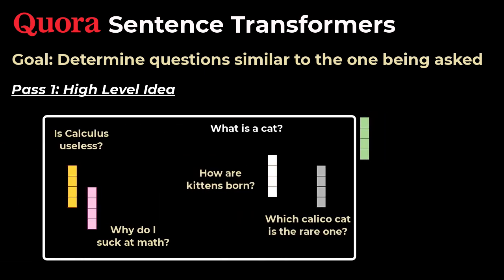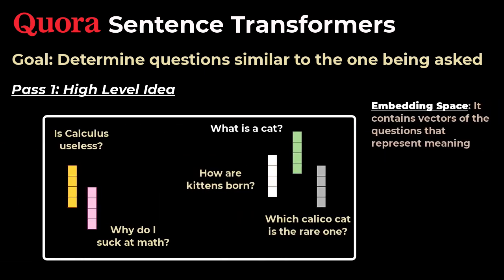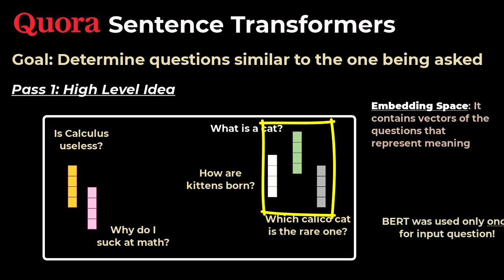Then step two, we compare it to all other questions using something like a cosine similarity metric. And then the third step is that we return the nearest neighbors as the most related questions. So for a question added, we need to use the BERT model only once, and not 100 million times as we suggested before. This is good since computing simple cosine similarities between vectors is much cheaper than passing in all questions on the platform through the complex model every time you need to make a decision.